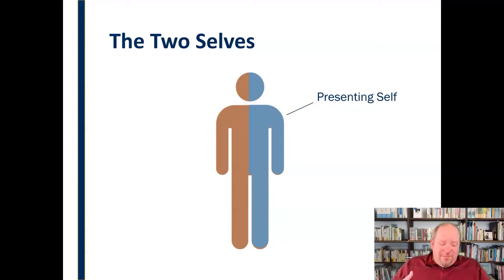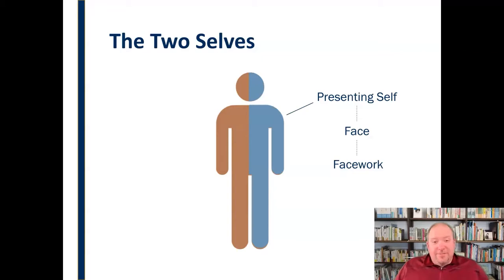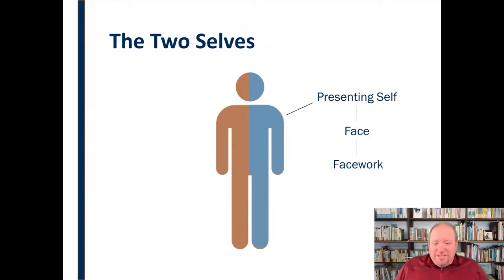We call this building face — this image that we put out for the world is called face. And we work to create this face through what's called face work. Face work is what we do to cultivate that image: by wearing a certain type of clothes, by speaking a certain way. My family gets a kick out of watching me teach because they say my voice changes. The voice you're hearing here is probably not the voice my family hears at home. They say I have my professor voice on — almost my radio voice. So that's part of my face work: I change my voice, I change my clothes, I change all these things to build this image.